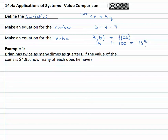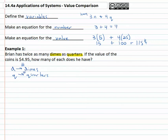So that's the process we're going through: we clearly make one equation for the number of coins and one equation for the value of the coins. For example, if Brian has twice as many dimes as quarters and the value of the coins is four ninety-five, we want to know how many of each he has. We define our variables — D represents dimes and Q represents quarters, specifically the number of dimes and the number of quarters.